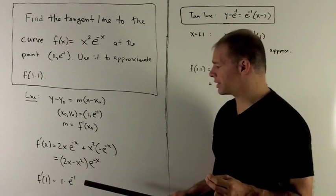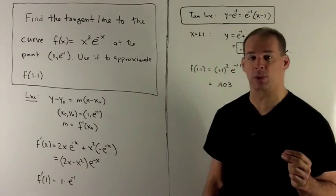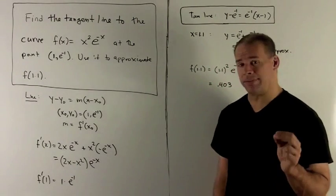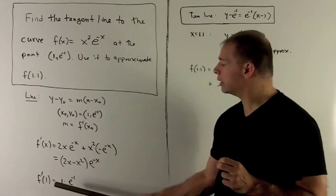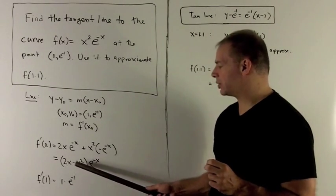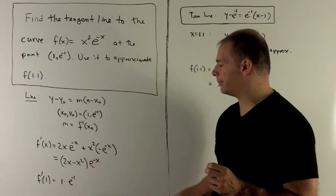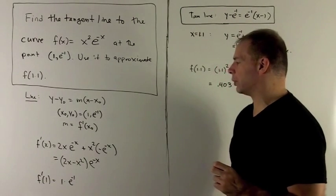I factor out e^(-x), I'm left with (2x - x²) in front. Now all I have to do is stick my 1 in, and then we're good to go. Put 1 into here, that's going to be 2 - 1, e^(-1). So this is just going to be e^(-1).